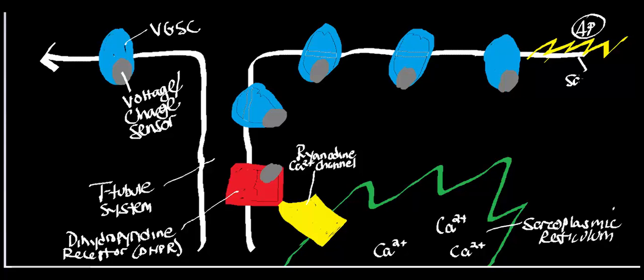This membrane right here is called the sarcolemma — it's the muscle cell membrane. Inside is what's called the sarcoplasm, or the cytosol inside the muscle cell. The action potential is literally the consecutive opening of voltage-gated sodium channels along the membrane of the muscle cell.